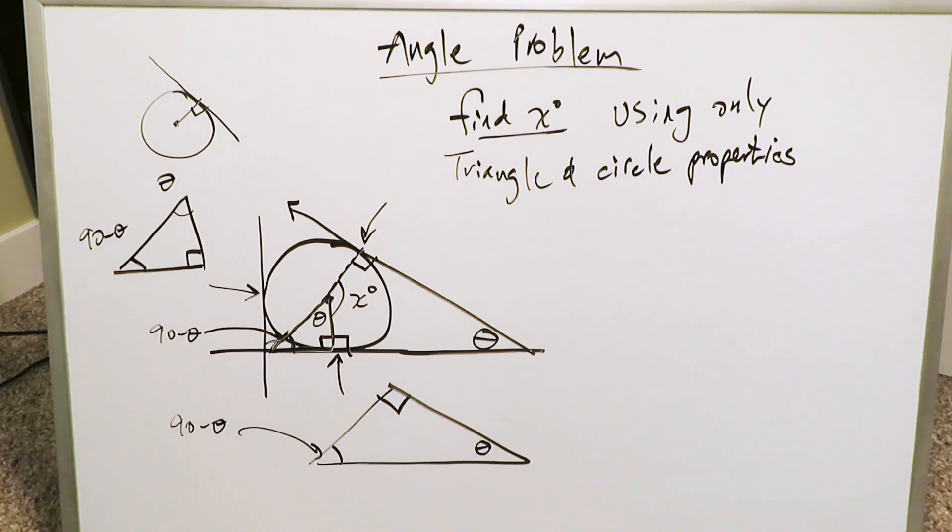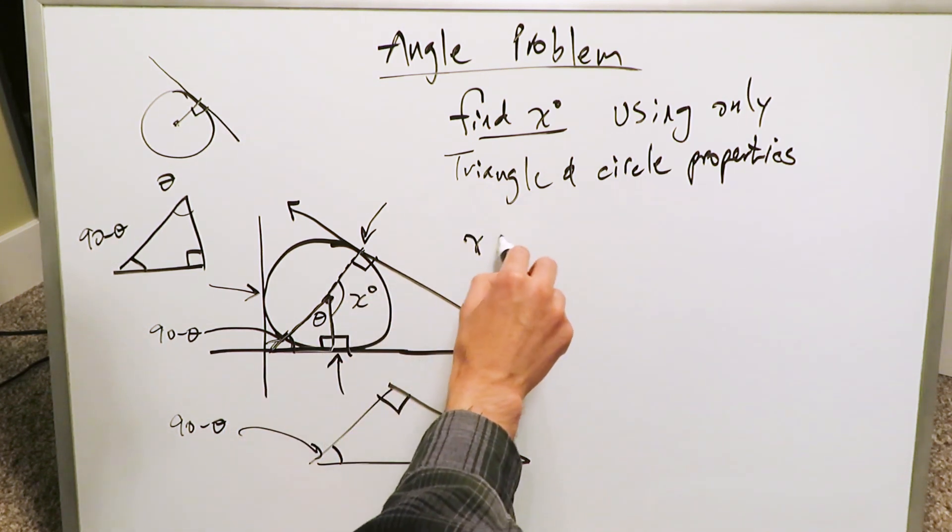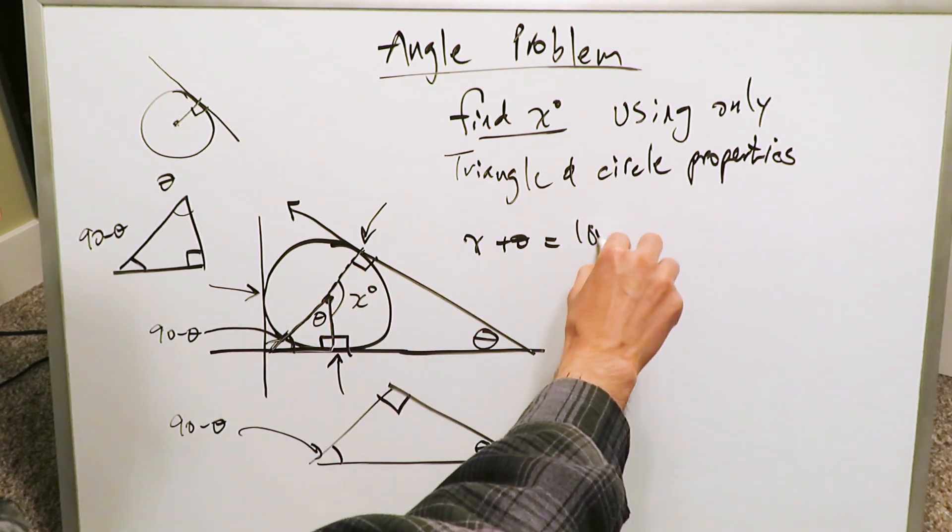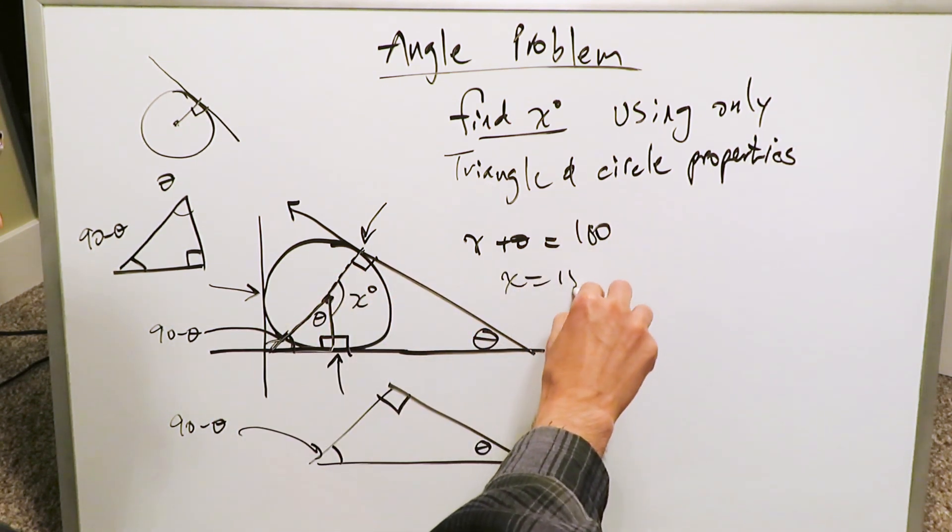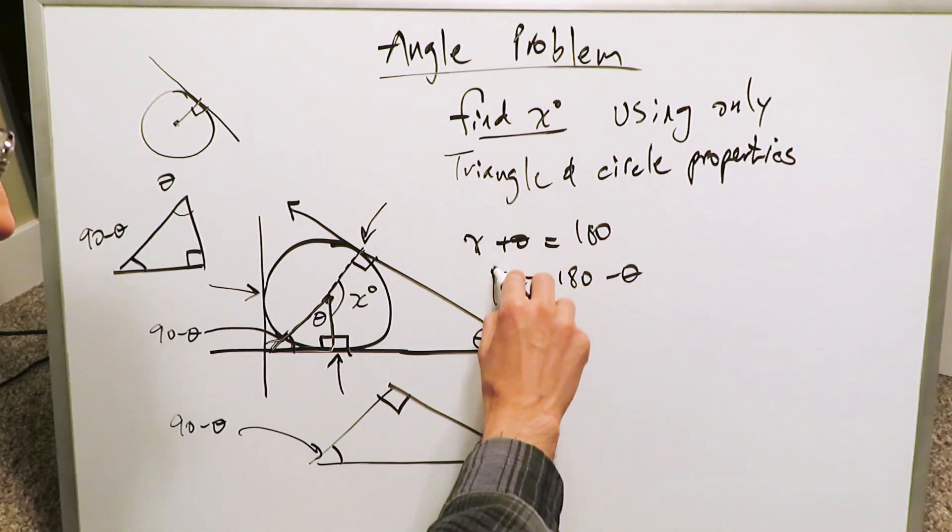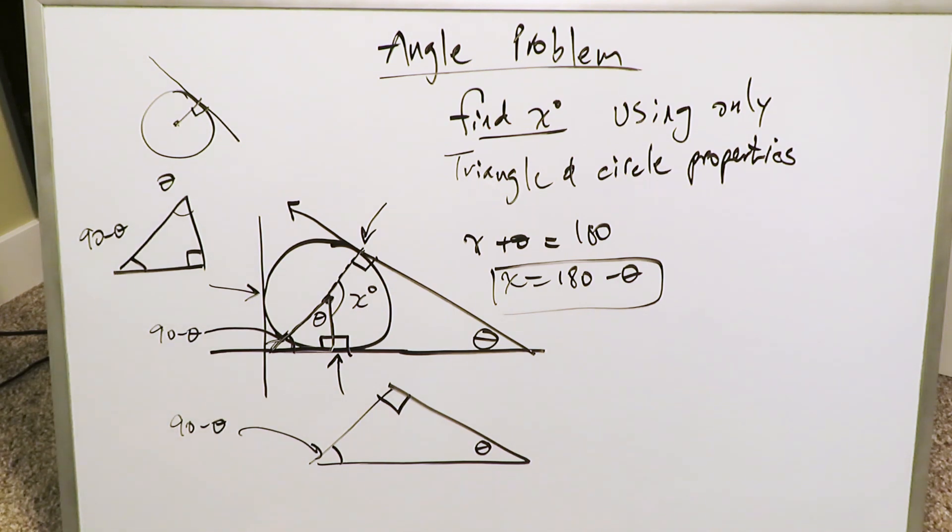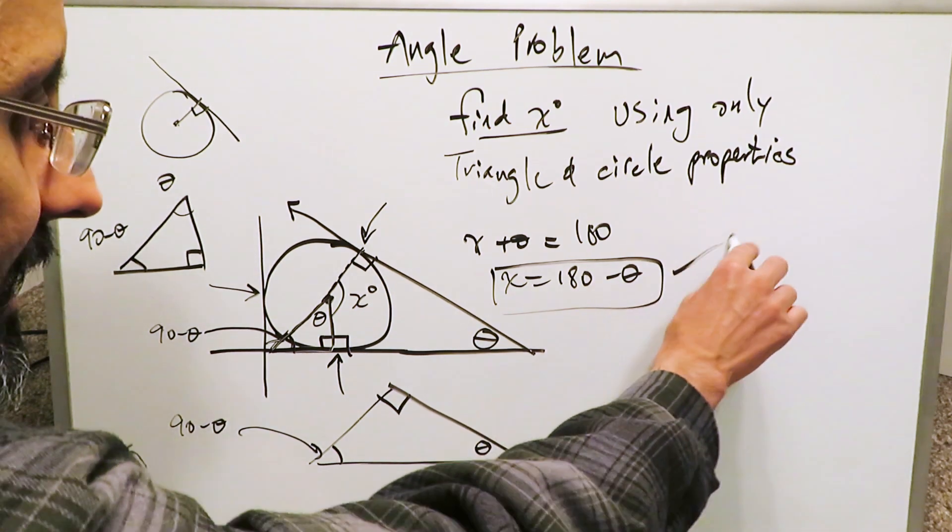And now we can easily determine x. The x angle over here is going to be determined by the supplementary angle properties. x plus theta are supplementary. They form a straight line. They equal 180. Therefore, x must be 180 minus theta, which is exactly what we saw using the quadrilateral properties. But here we were restricting ourselves to triangle and circular properties. And this right here is our answer.